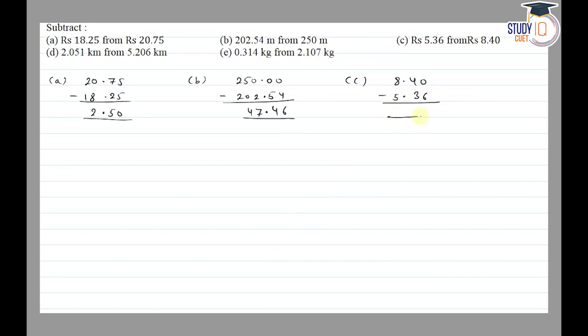8.40 minus 5.36. 0 minus 6, we borrow, so 10 minus 6 is 4. 3 minus 3 is 0. 8 minus 5 is equal to 3. So the answer is 3.04.